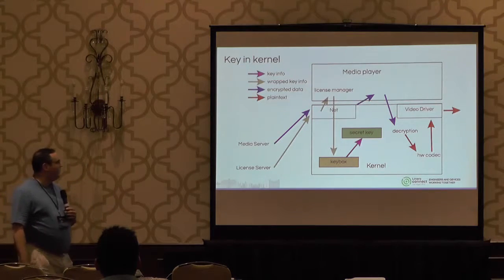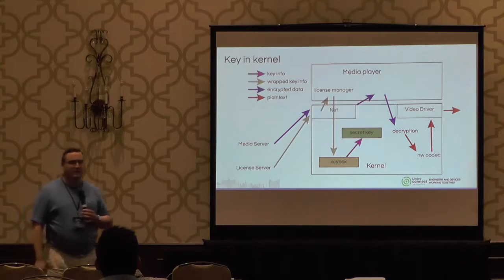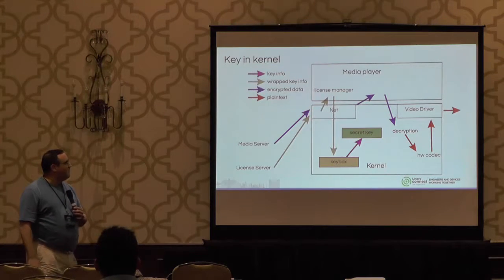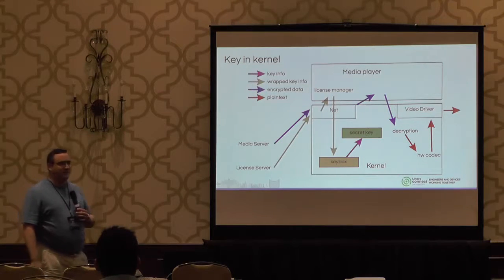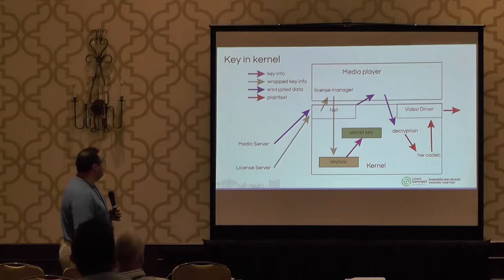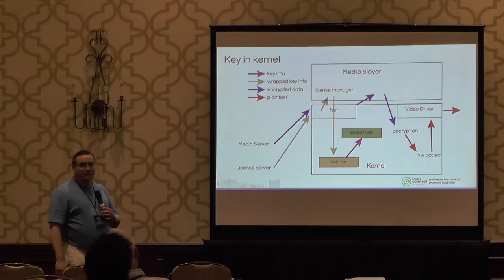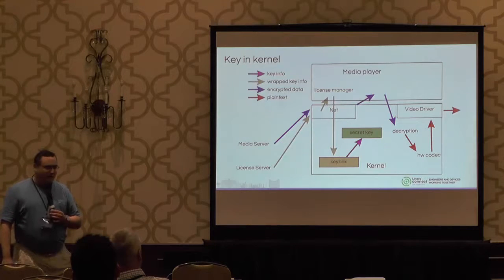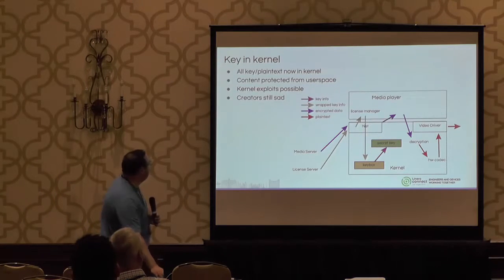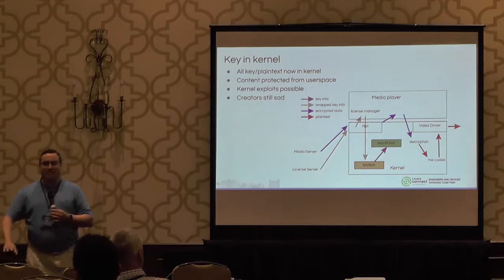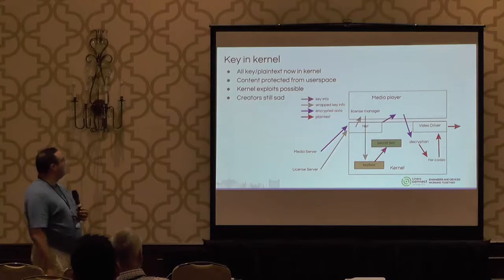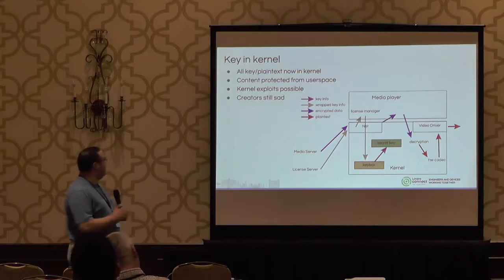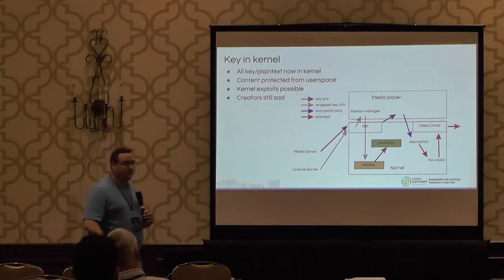What we do is we have this thing called a key box, which is a secret known only between this system and the license server. We use that to encrypt the secret key before it is sent over the network to user space. This gives us the advantage that we keep the key out of user space. However, we still have all the same problems with the kernel. Kernel exploits are still possible, and the creators are still sad — we don't get HD.